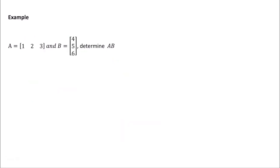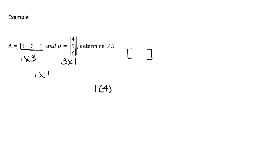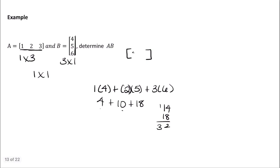Let's try multiplying a 1 by 3 matrix and a 3 by 1 matrix. The middle numbers match, so multiplication is allowed, and the outside numbers tell us the result is a 1 by 1 matrix. We take the one row [1, 2, 3] and multiply by the column [4, 5, 6]: 1 times 4 plus 2 times 5 plus 3 times 6 equals 4 plus 10 plus 18 equals 32. So 32 is our solution — just a matrix with one element.